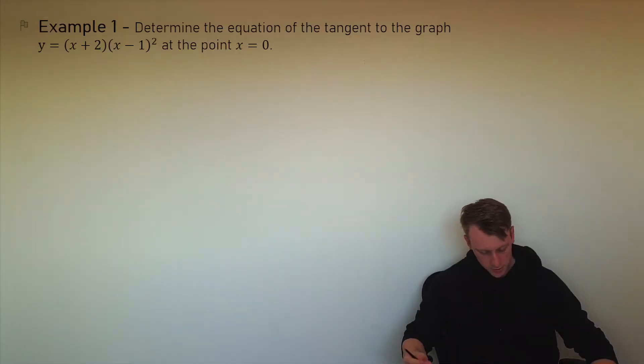This example here says determine the equation of the tangent to the graph. And we've got a function there, y equals x plus 2 times x minus 1 squared at the point when x is equal to 0.